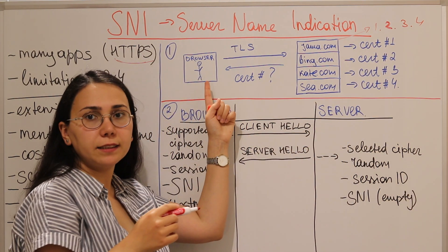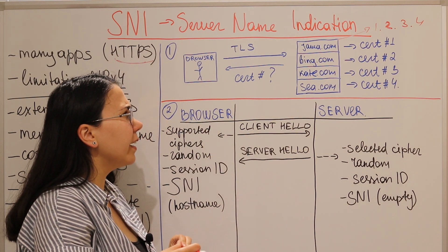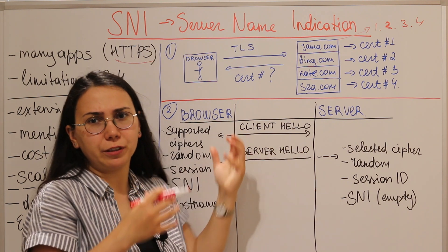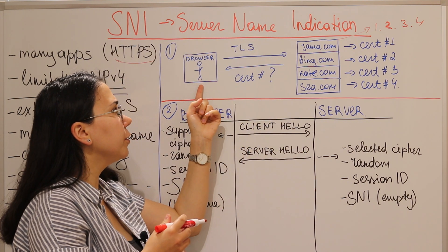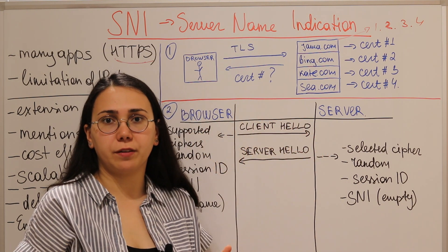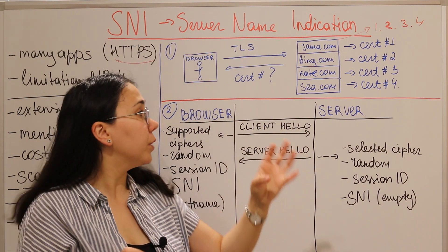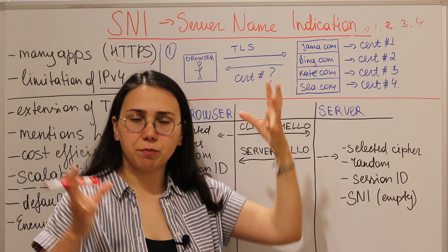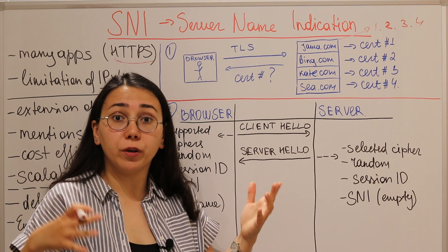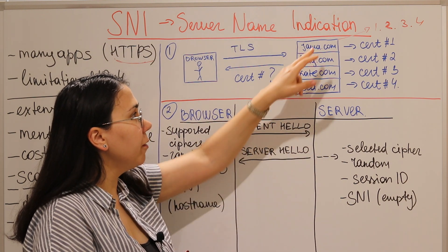That same server has one IP address — say, 1.2.3.4. We have one IP address and four applications. As a user trying to access jama.com, I go to 1.2.3.4, and the server needs to serve a certificate during the TLS handshake — but which certificate? If it serves a common certificate, the user could potentially access bing.com, kate.com, and c.com, which is not secure. Each certificate should be tied to one specific domain.